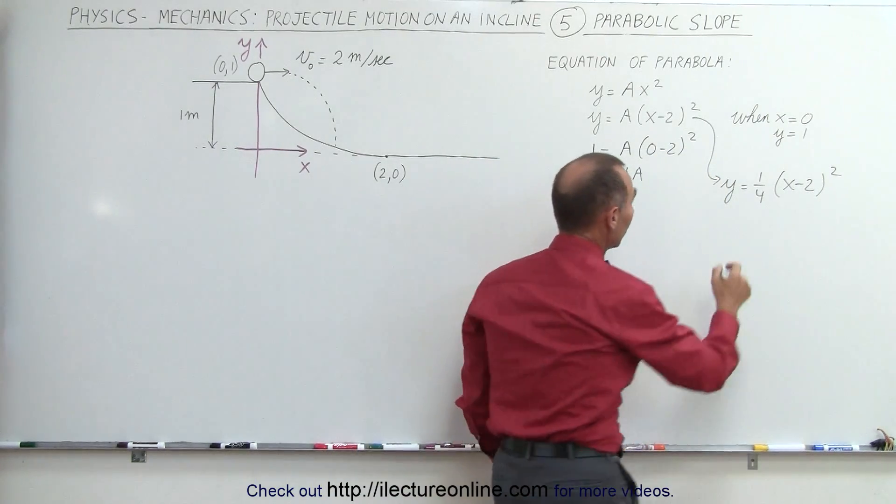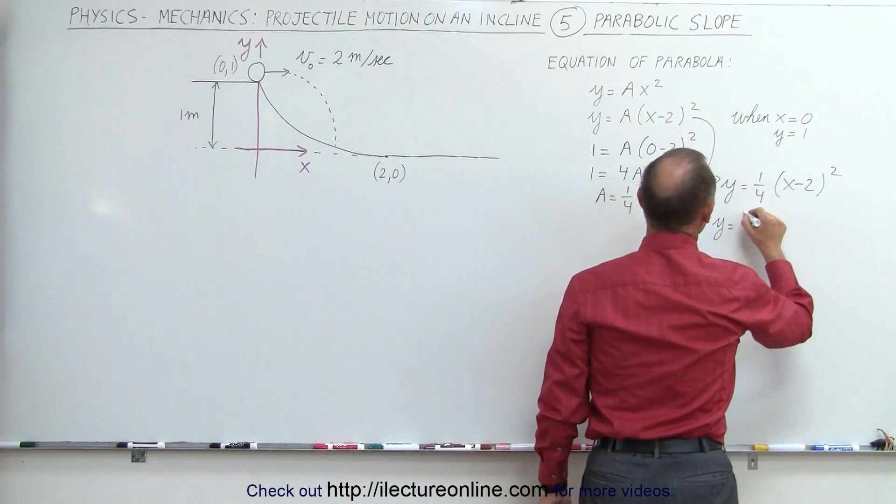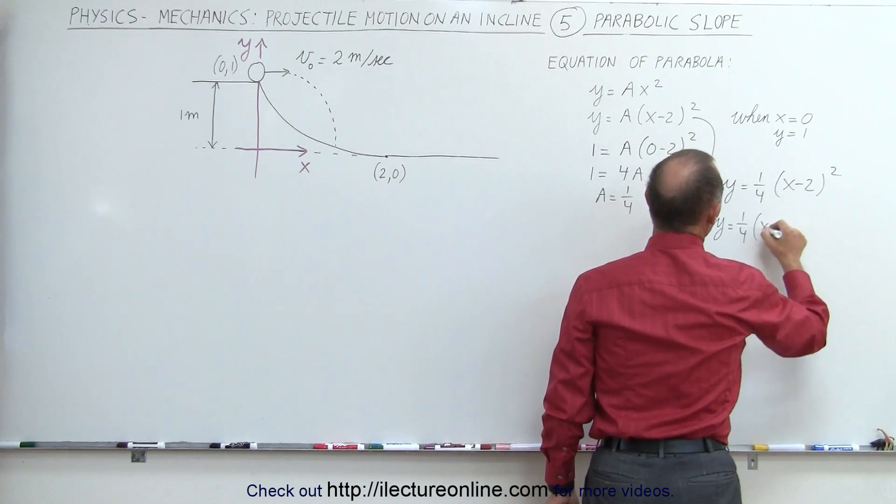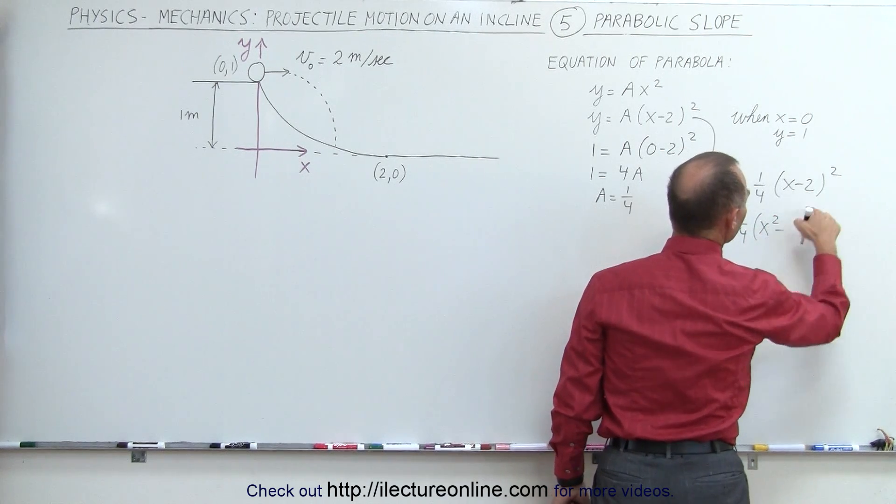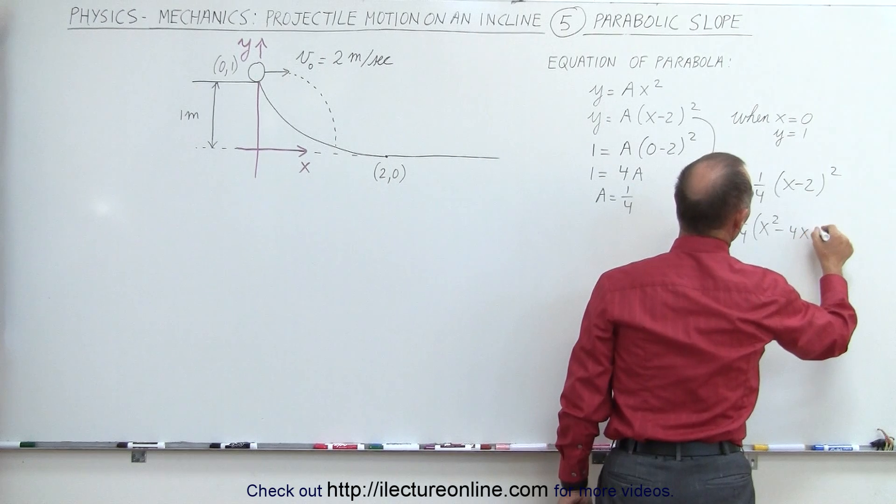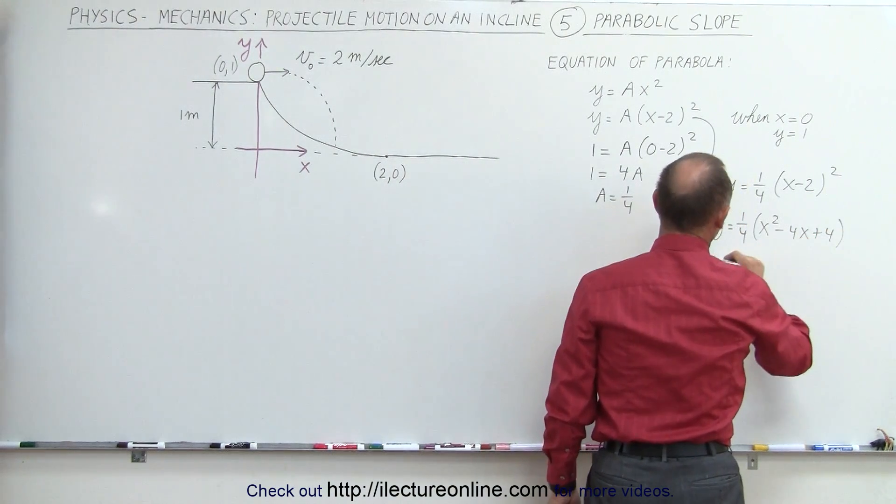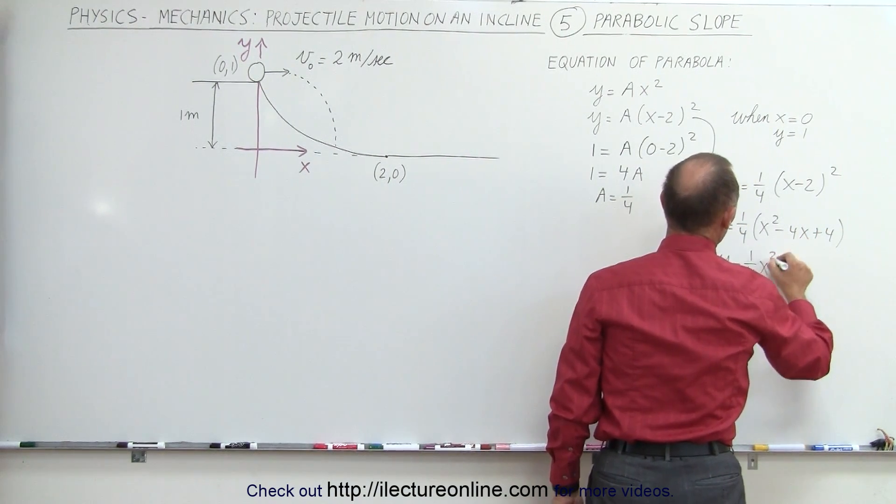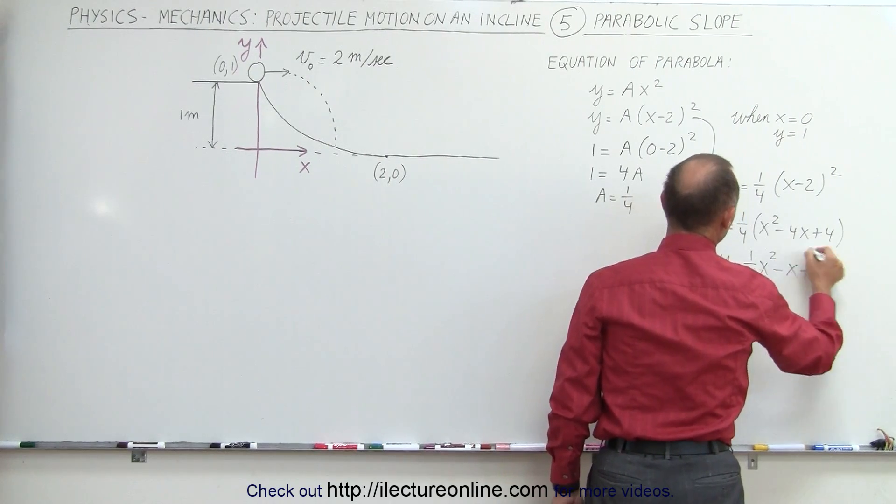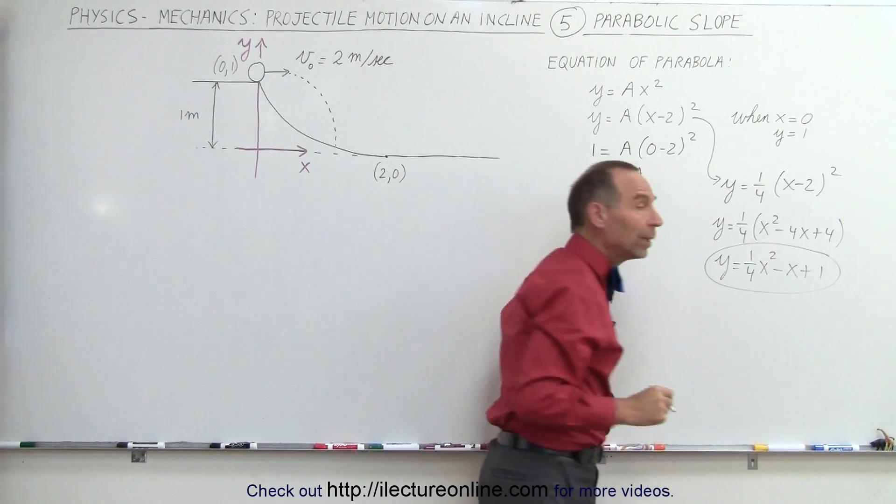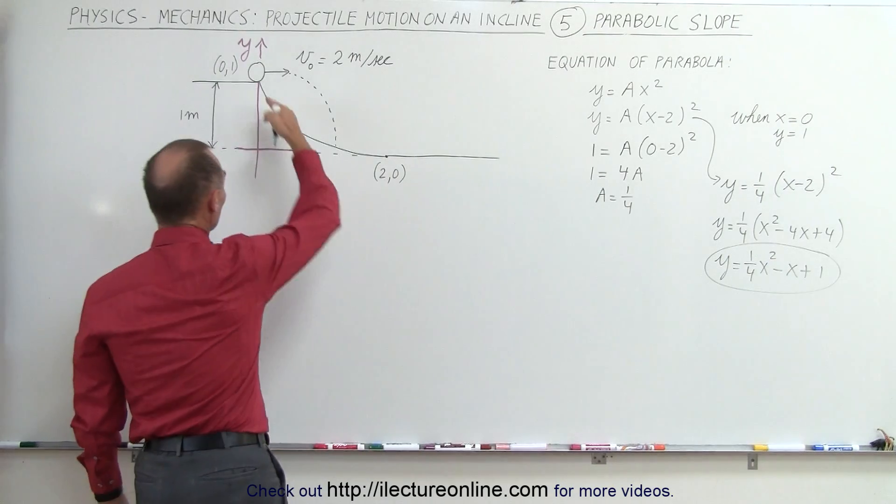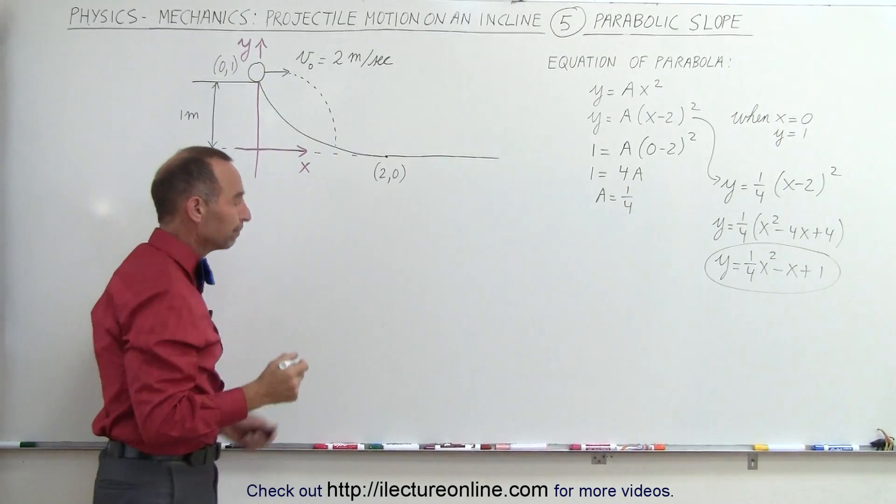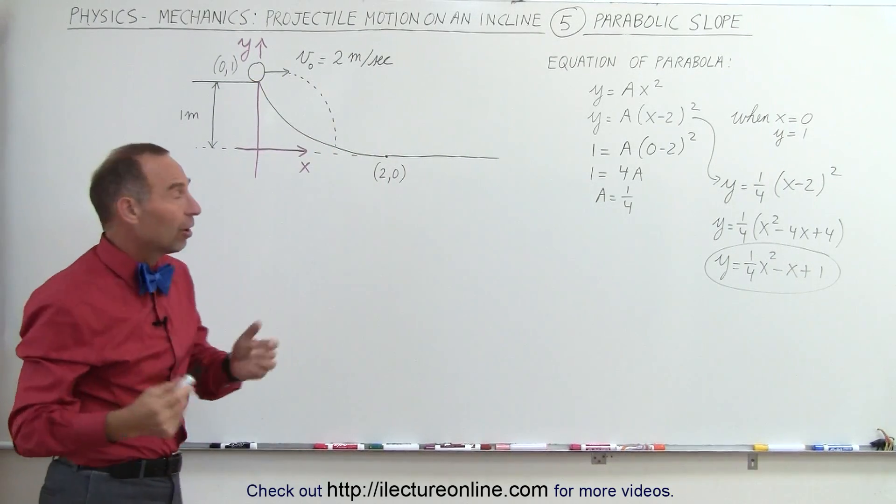And if you want to multiply that out, you can see that y is equal to one quarter times (x squared minus 4x plus 4) or y equals one quarter x squared minus x plus 1. So there's the relationship between x and y because our slope has a parabolic shape to it. Now let's go ahead and solve the problem.